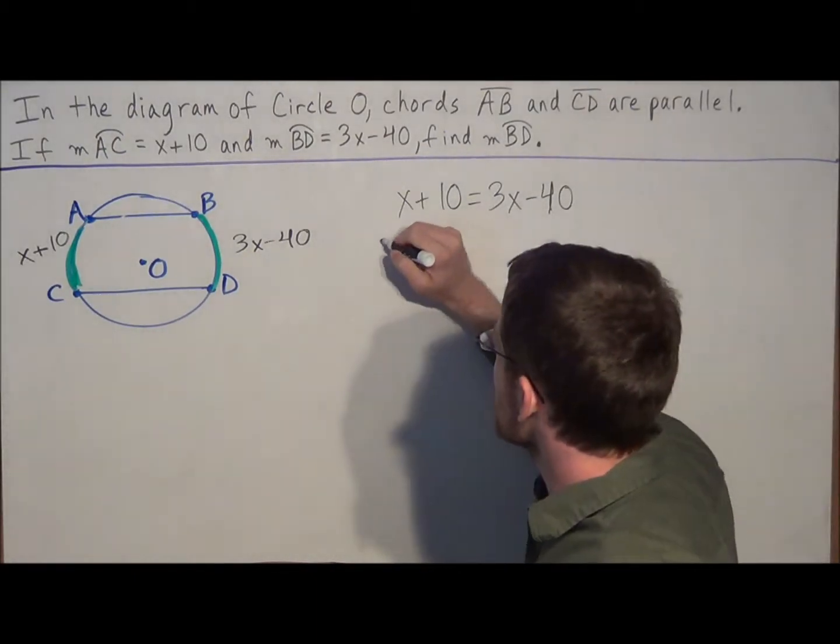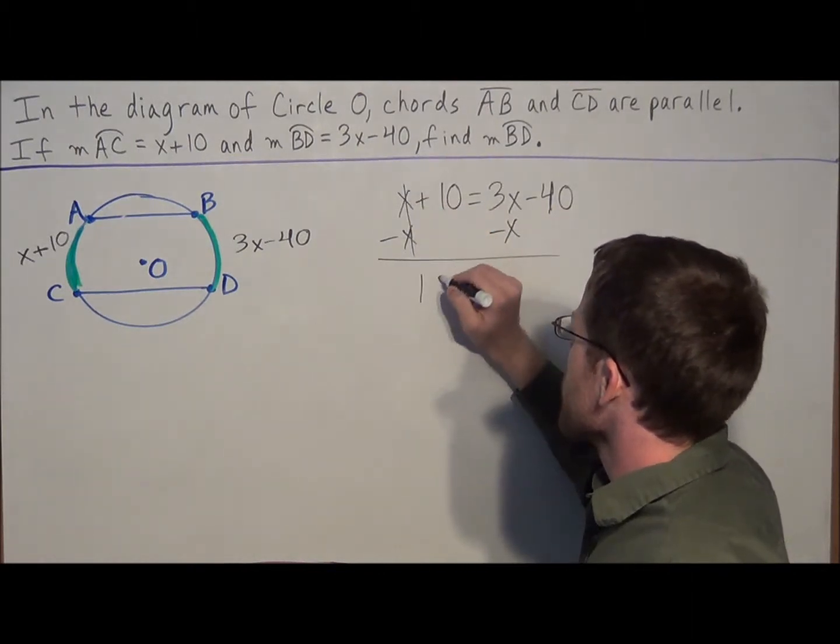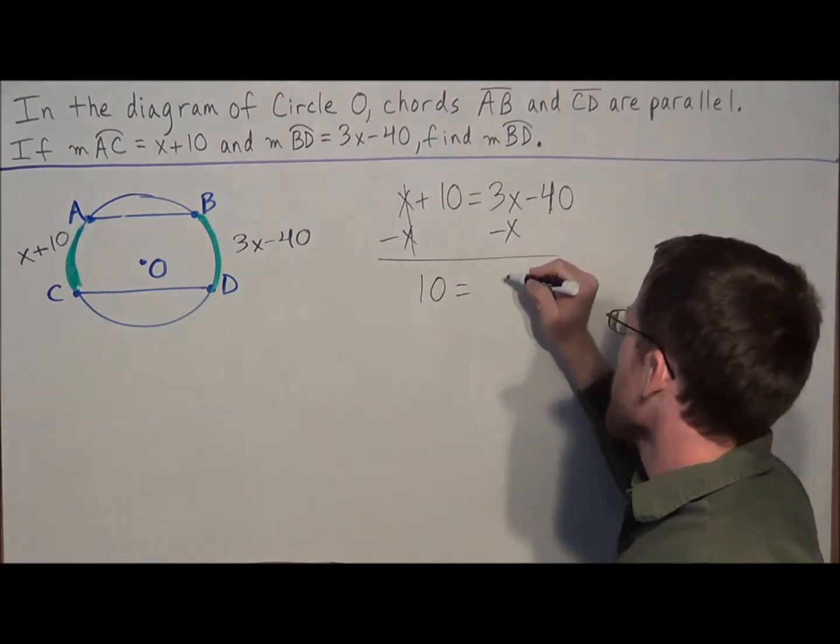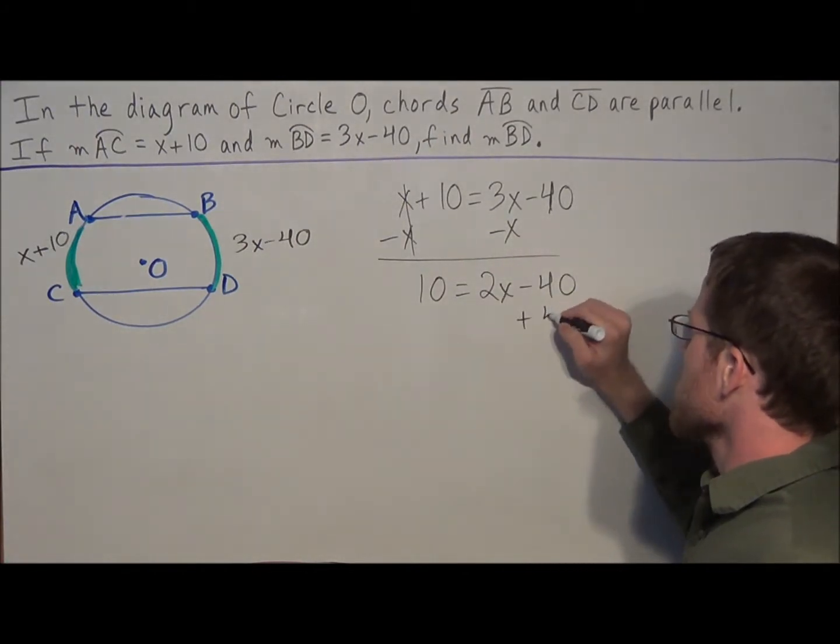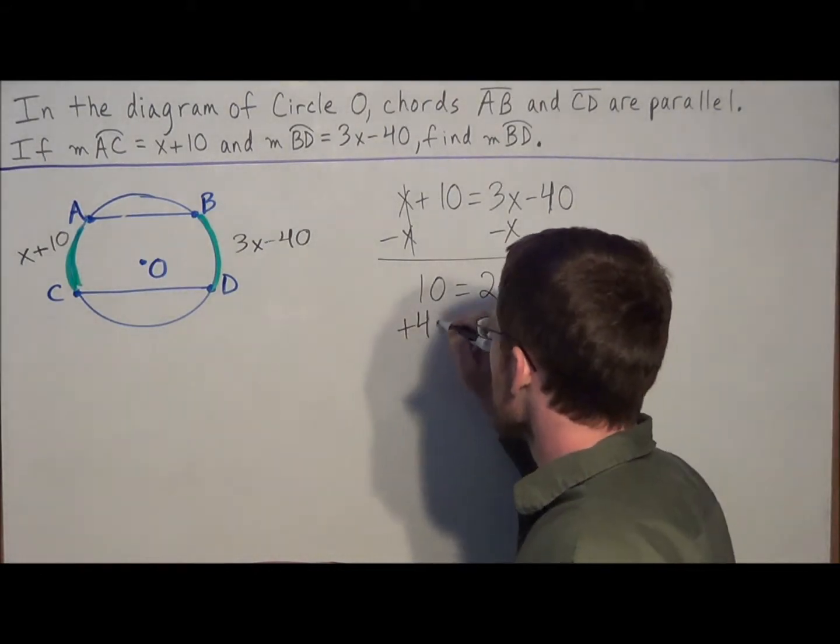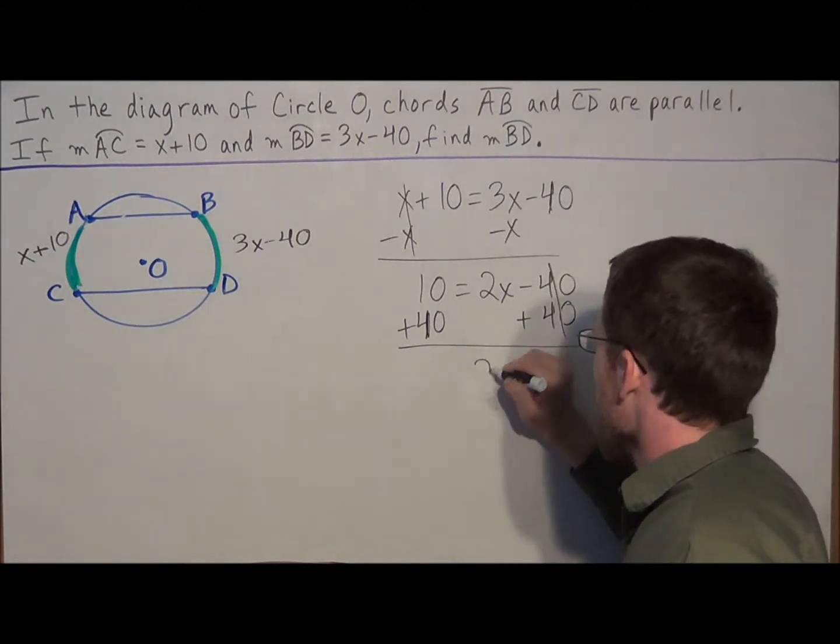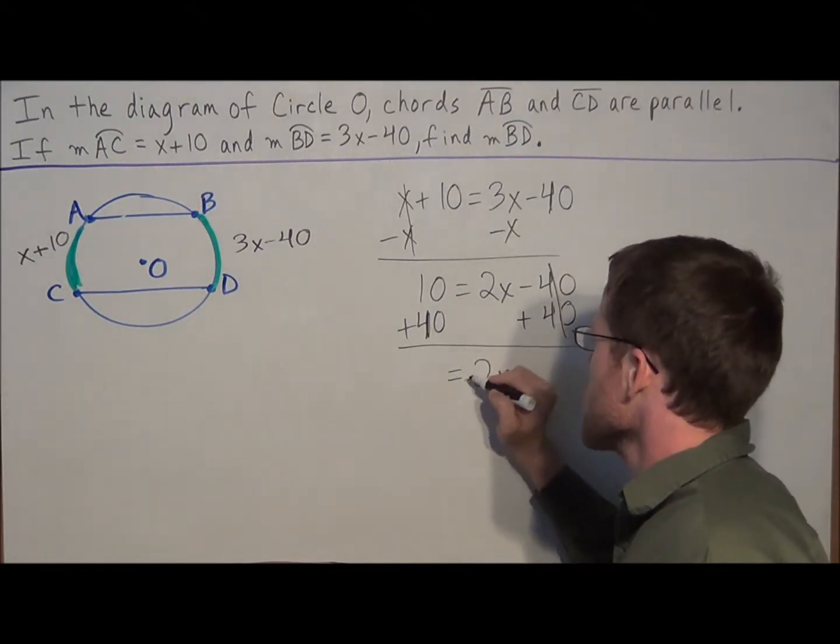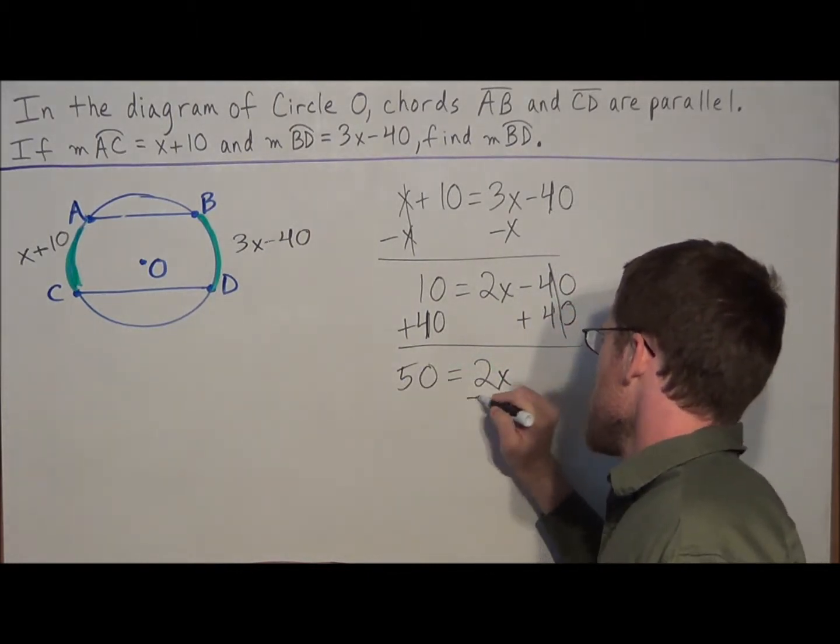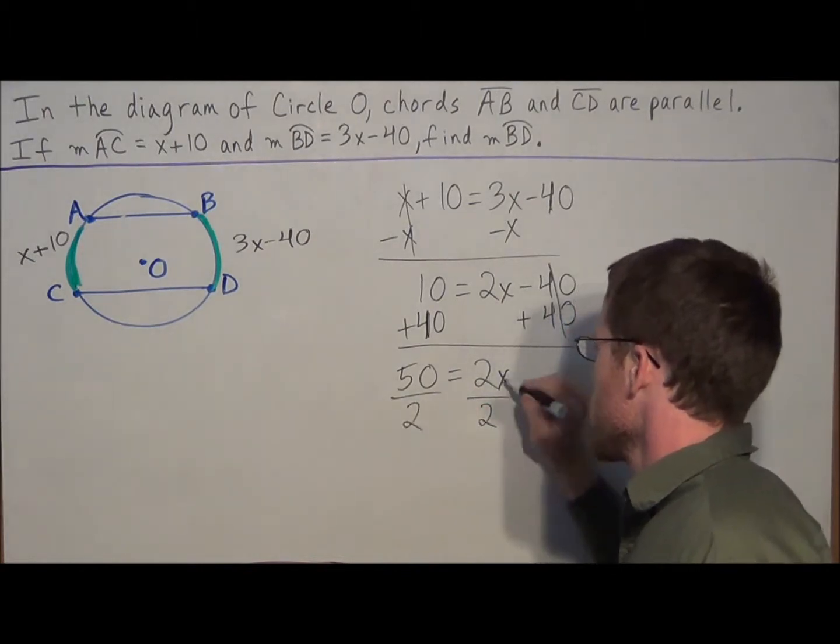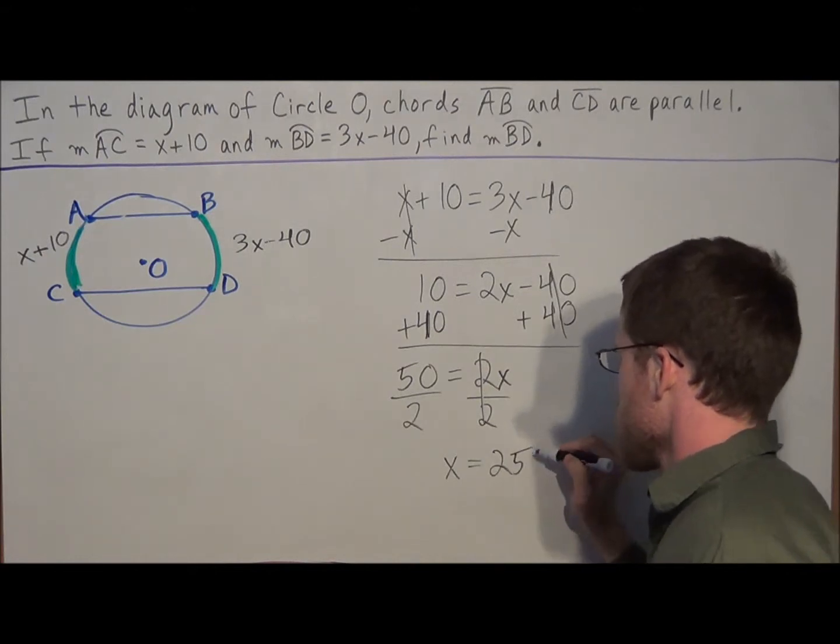So then to solve for x, all we have to do is subtract x from both sides, and we have 10 equals 3x minus x is 2x. We carry down our minus 40. Now we could add 40 to both sides. Our next line will say 2x equals 10 plus 40, which simplifies to 50. So then the last thing we need to do is divide both sides by 2, and we have that x is equal to 25.